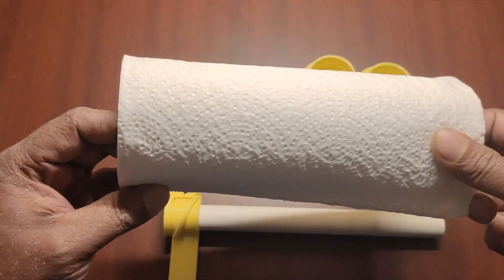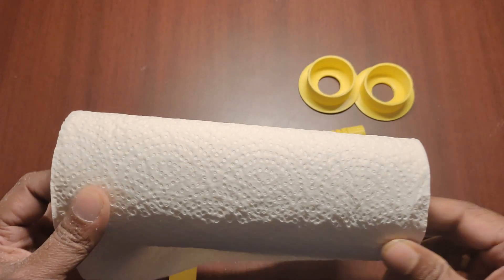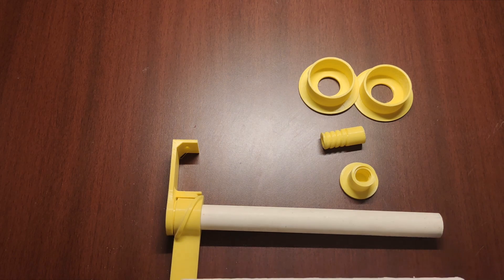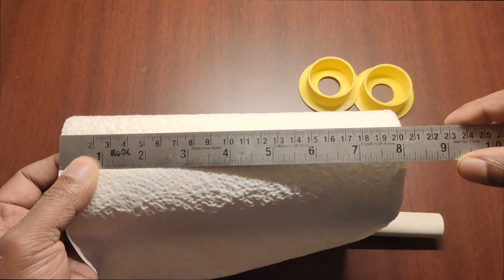This is the kitchen roll which we are going to attach in this dispenser. Most of the kitchen tissues come in the same width of around 20 to 21 cm.